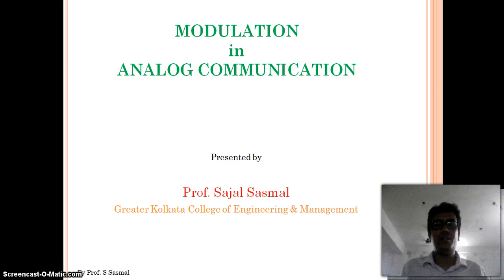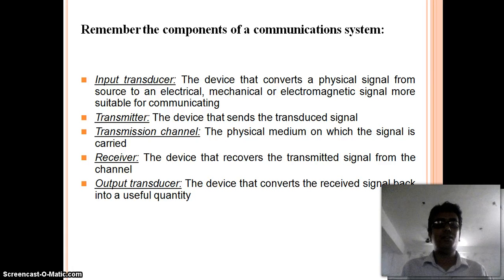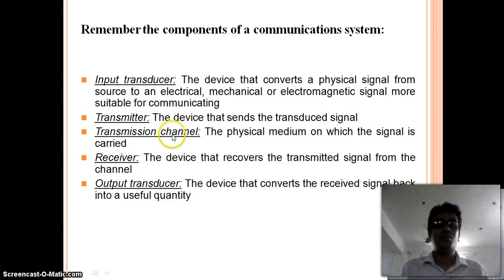At first we should know what is communication. Communication means exchange of information between two point entities or devices. There are a few terms we should know if we study communication. The first one is input transducer. By the help of the input transducer we can convert a signal into another form. For example, a microphone can convert the acoustic signal into its corresponding electrical signal. The transmitter is the device which sends the transmitter signals, and by the help of a transmission channel we will send the signals from source to destination.